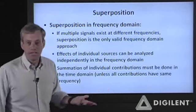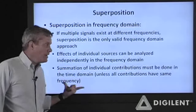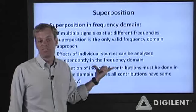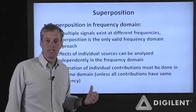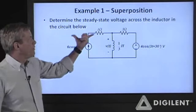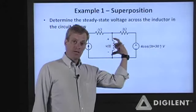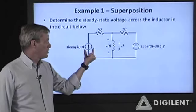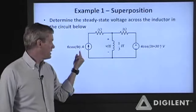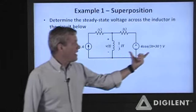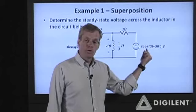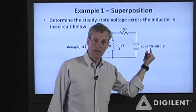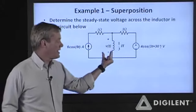One special case — not of very much interest — is if all sources have the same frequency. Then all the impedances will be the same value and you can superimpose directly in the frequency domain. Now our first example: we want to determine the steady state voltage V(t) across an inductor in a circuit. I have two forcing functions: a current source of 6cos(9t) amperes at 9 radians per second, and a voltage source of 4cos(3t + 30°) volts at 3 radians per second.